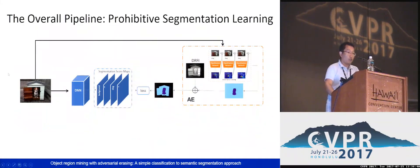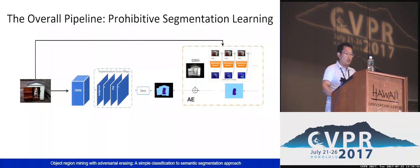We follow some previous works and use saliency detection techniques to produce background cues. Collaborating with mined foreground object regions from adversarial erasing, we generate the segmentation mask for training. The blue regions are unlabeled pixels, which are ignored during training. To exploit those ignored regions as well as to alleviate noise, we further propose an online prohibitive segmentation learning method.